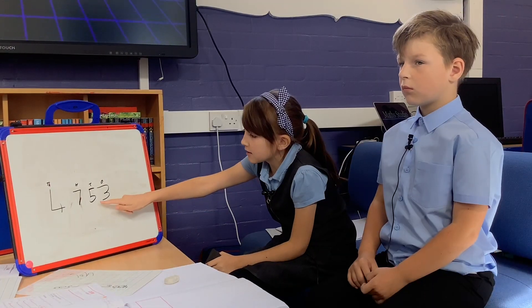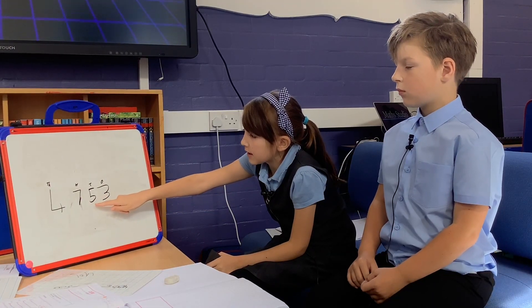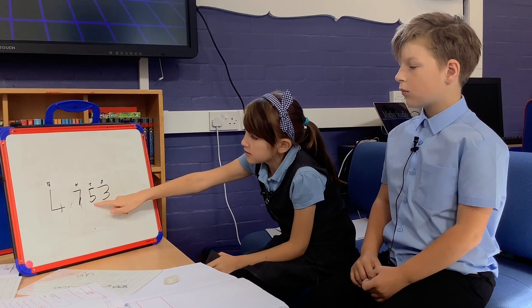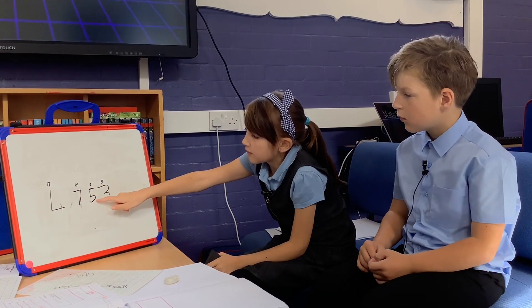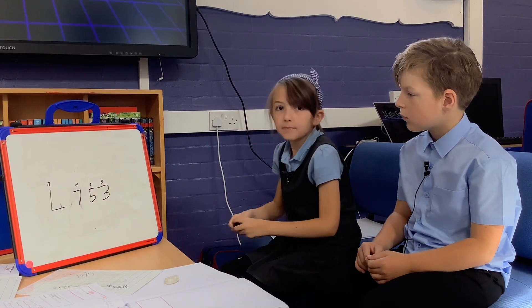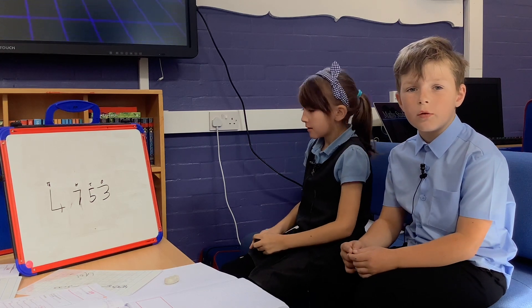So we're going to see if we're rounding up or down by this number here. Since it's five, we're going to be rounding up — far and high to the sky, far and down to the ground.